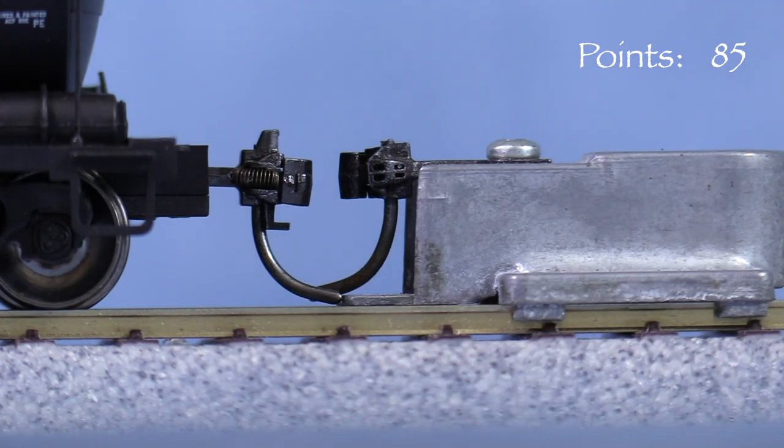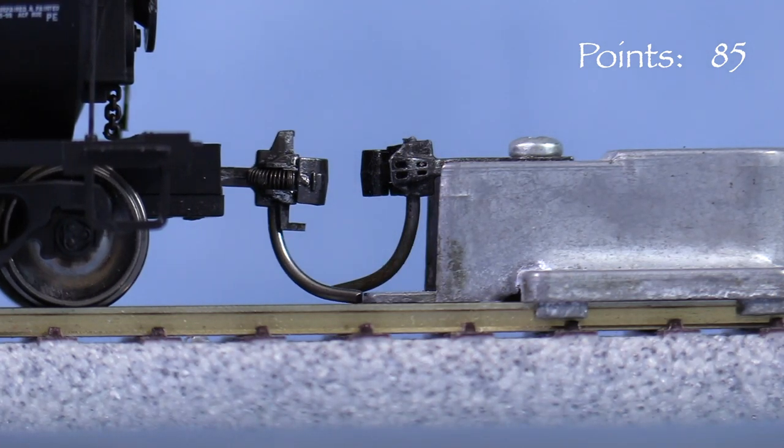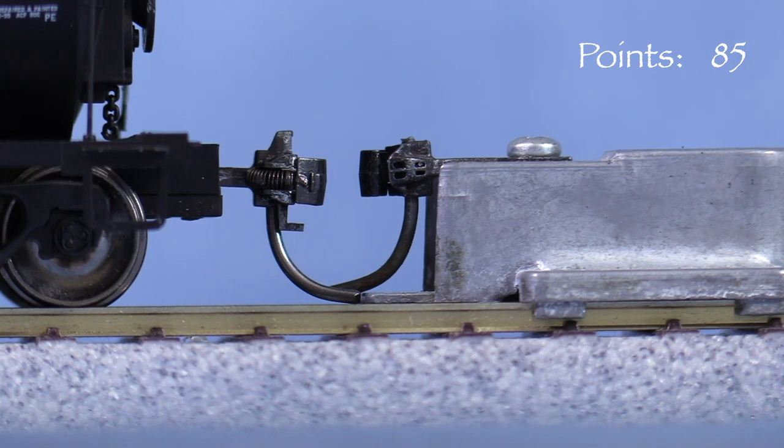Unfortunately, the new coupler on the A end is now low. The one on the B end is also low. Both couplers are drooping so I'm going to try shimming the inside of the draft gear box.